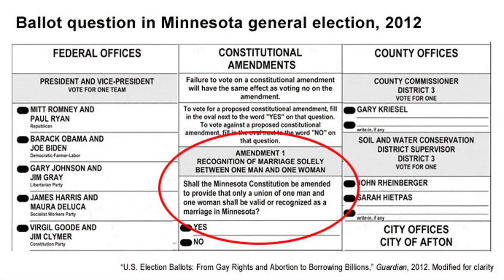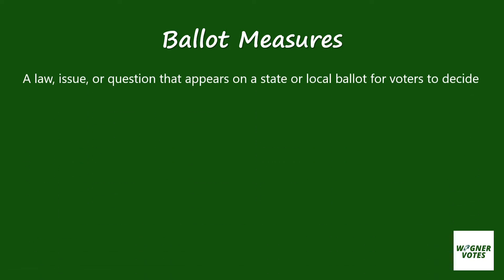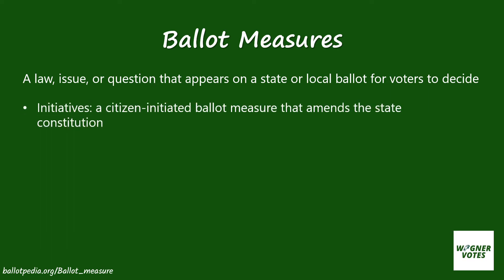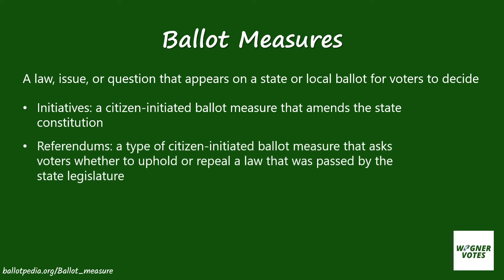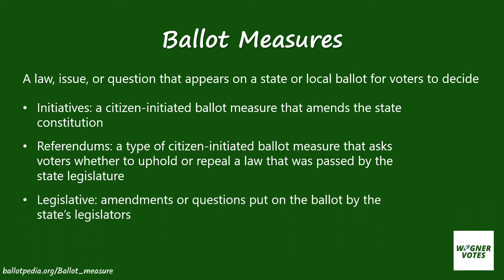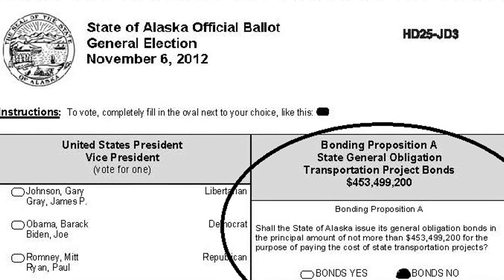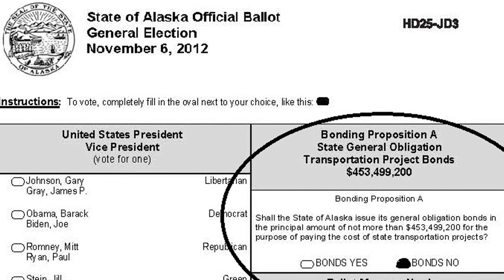Sometimes you're not only voting for people but for what we call ballot measures. Ballot measures are issues and questions that appear on ballots that voters can decide. There are a couple popular types: initiatives, which are citizen-initiated measures where you get a measure on the ballot by gathering enough signatures on a petition; referendums, which are also citizen-initiated but are meant to decide whether to repeal a law passed by legislation; and legislative ones, where legislators put questions on the ballot to gauge public opinion.